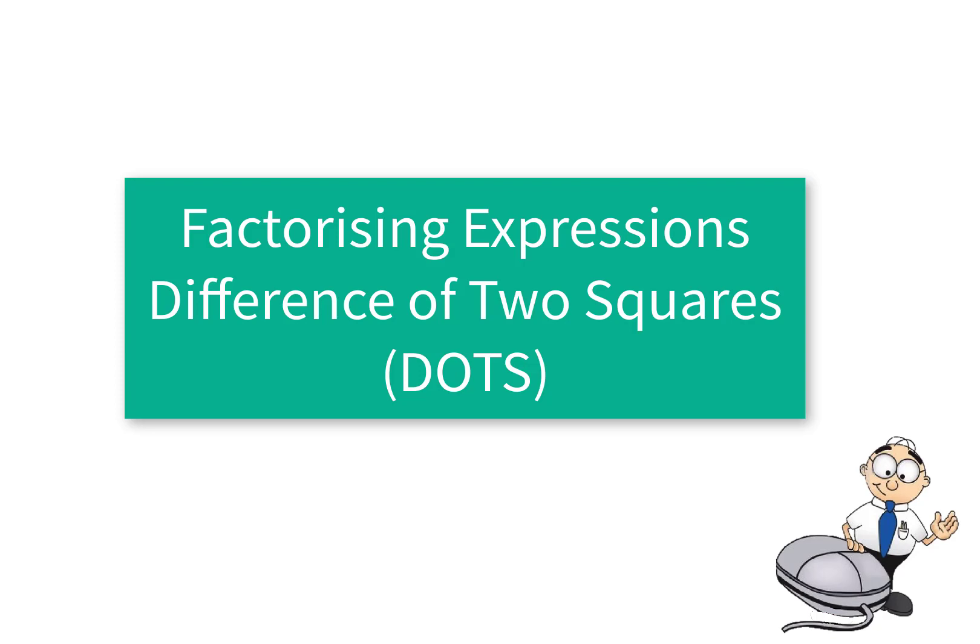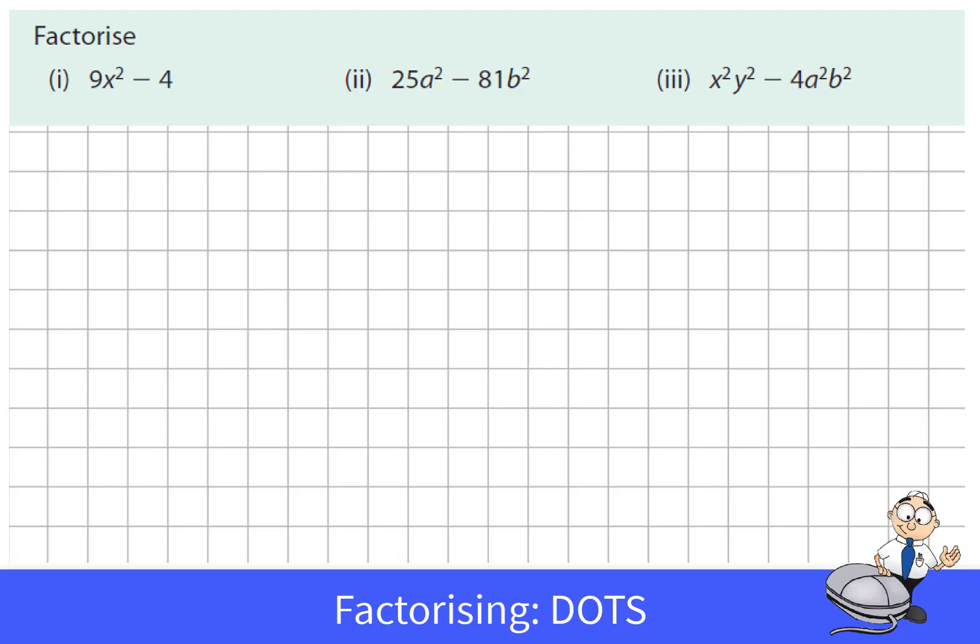This video looks at some examples of factorizing expressions using the difference of two squares. Here are three examples. In the first example we have 9x squared take away 4.